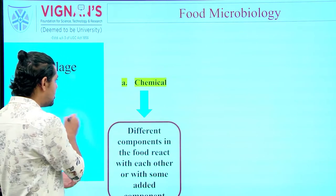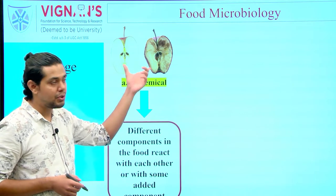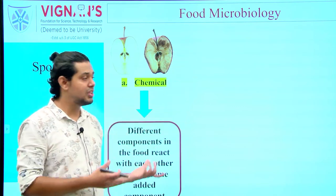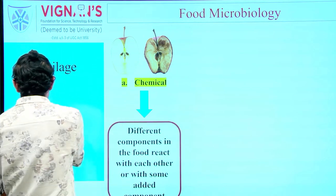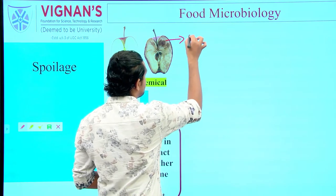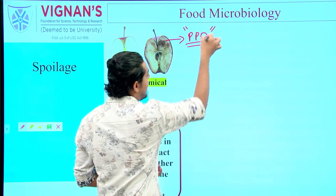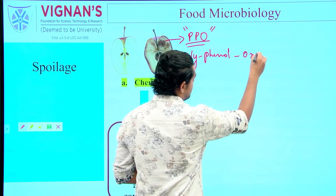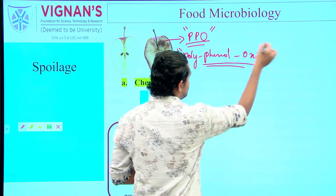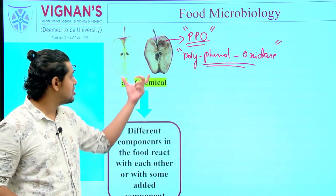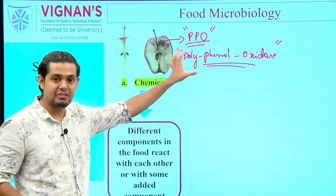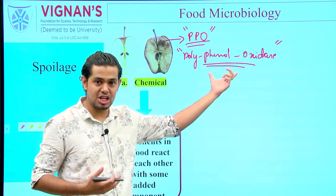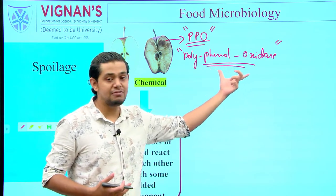As an example, a cut apple turns brown due to chemical change brought about by a specific enzyme called polyphenol oxidase, abbreviated as PPO. This enzyme is responsible for the color change in apple. A similar kind of color change is observed in bananas, which also turn brown because of polyphenol oxidase.